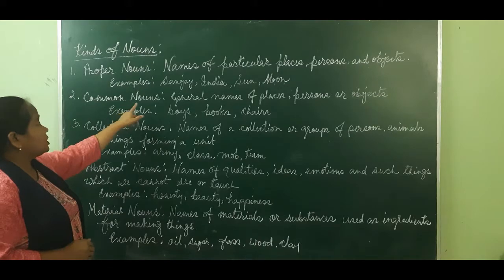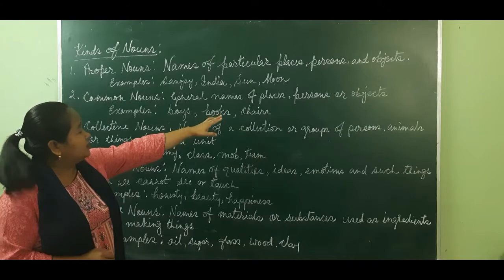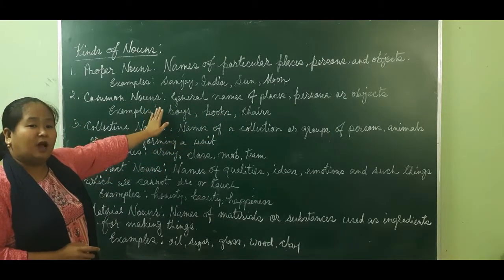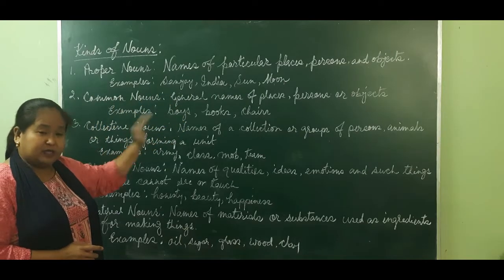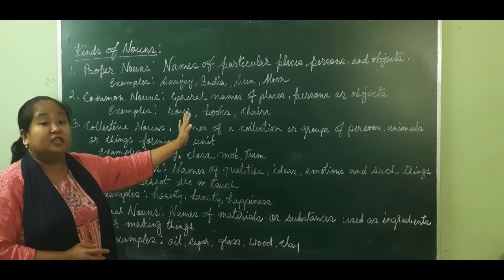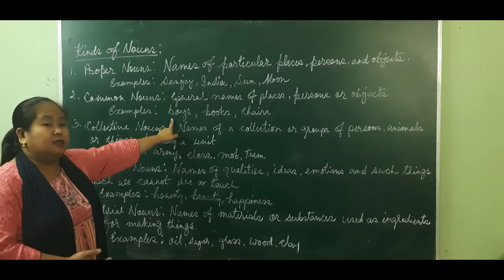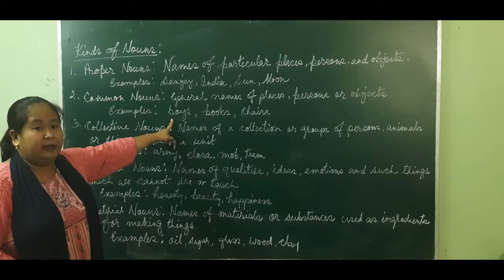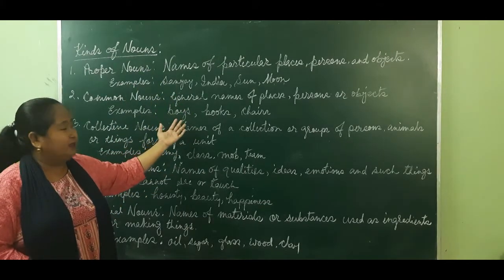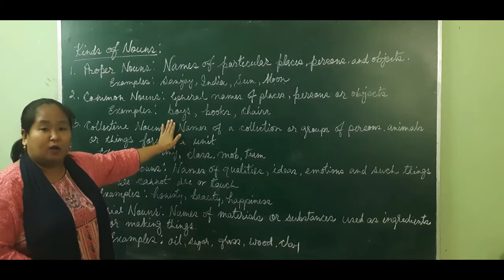Common nouns are the general names of places, persons, or objects. A common noun names persons, places, or objects of the same kind — a general name. For example: boys — there are so many kinds of boys. Girls — so many kinds of girls. Books — so many kinds of books. Chairs — so many kinds of chairs. These are common nouns.